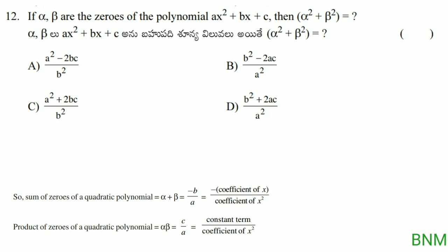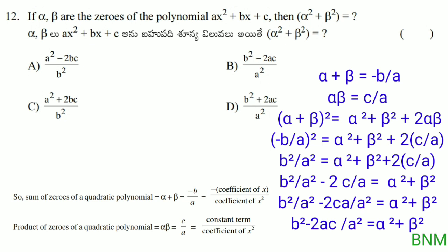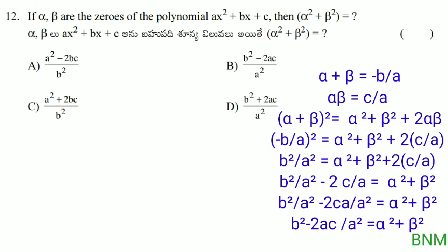Next: if alpha, beta are the zeros of the polynomial x squared plus bx plus c, then alpha squared plus beta squared equals? Using the identity: alpha squared plus beta squared equals (alpha plus beta) squared minus 2 times alpha times beta. Substituting: that is (minus b by a) squared minus 2 times (c by a), which equals b squared by a squared minus 2c by a, giving b squared minus 2ac by a squared. That is the right answer.